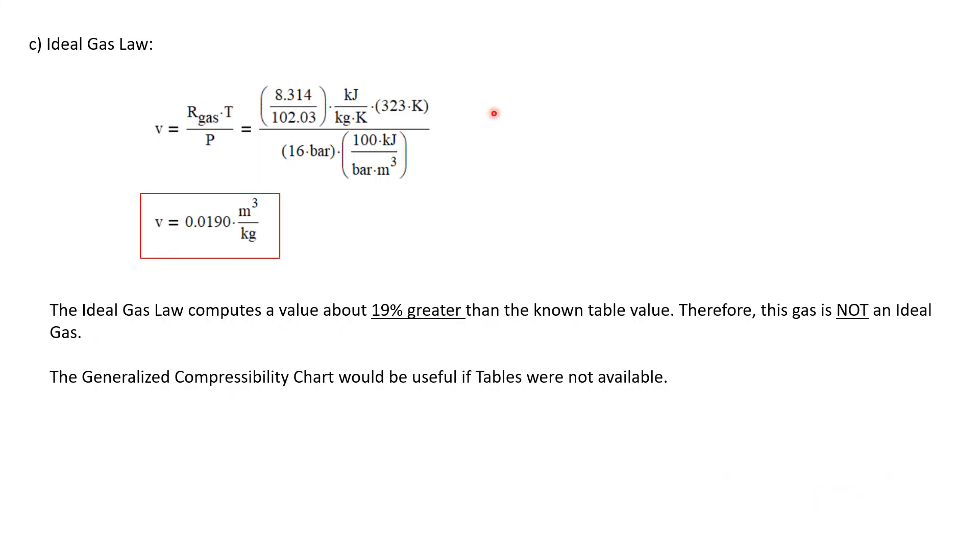Let's look at the third part of this problem and calculate the specific volume of this non-ideal gas with the ideal gas law. And we already can predict it's not going to give us a great answer. The specific volume of an ideal gas is RT over P. And we have all of those values as before. And we calculate a specific volume of 0.0190 cubic meters per kilogram.